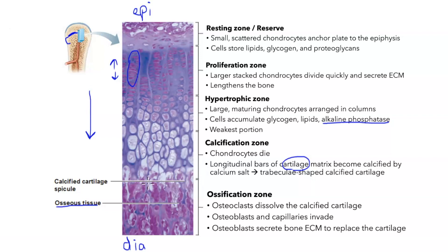The epiphyseal plate closes — meaning it becomes bone — around the end of puberty. What happens is that the proliferation zone becomes less and less active. The chondrocytes stop dividing, whereas the rest of the steps still continue. So the few remaining chondrocytes die and become bone, and there's no cartilage left to replace that. Eventually the entire epiphyseal plate is replaced by compact bone. This generally happens around the age of 18 in females and 21 in males, and that is when you stop growing.